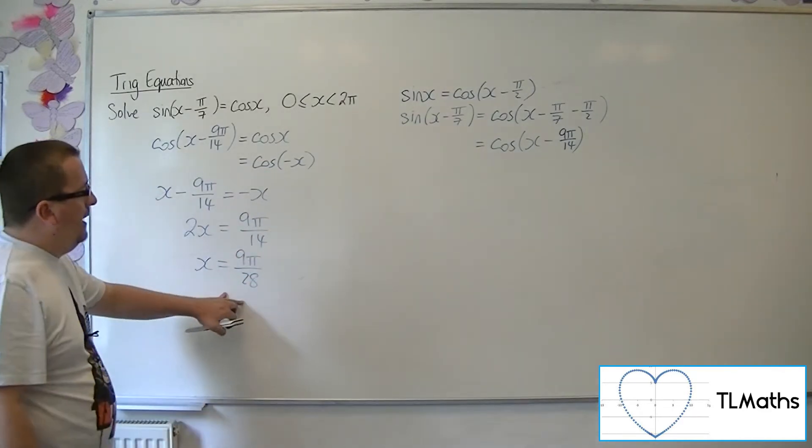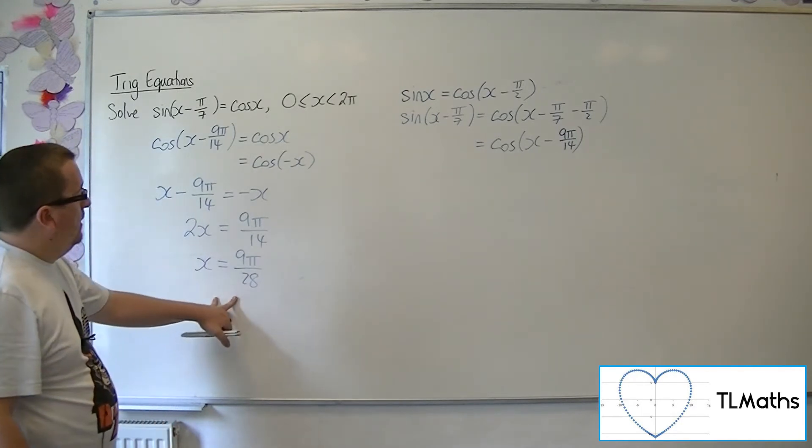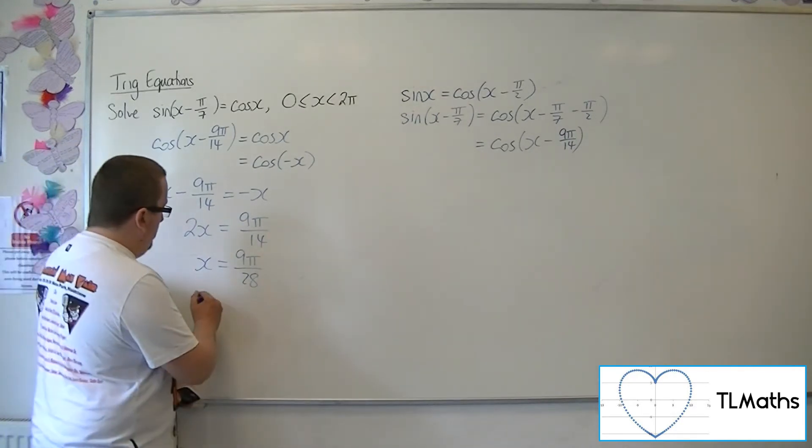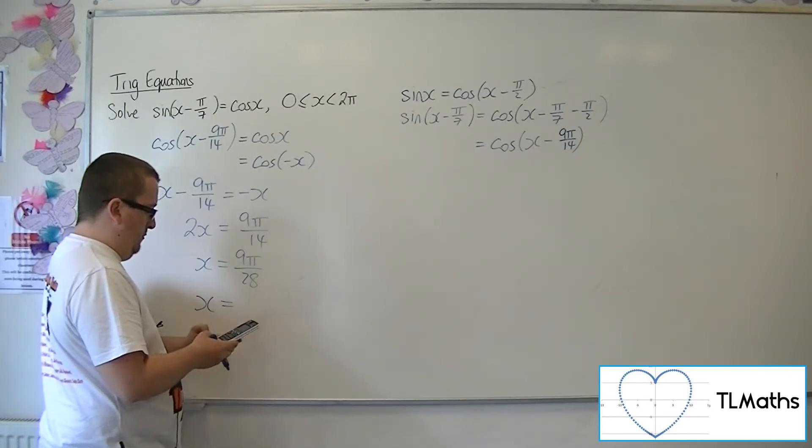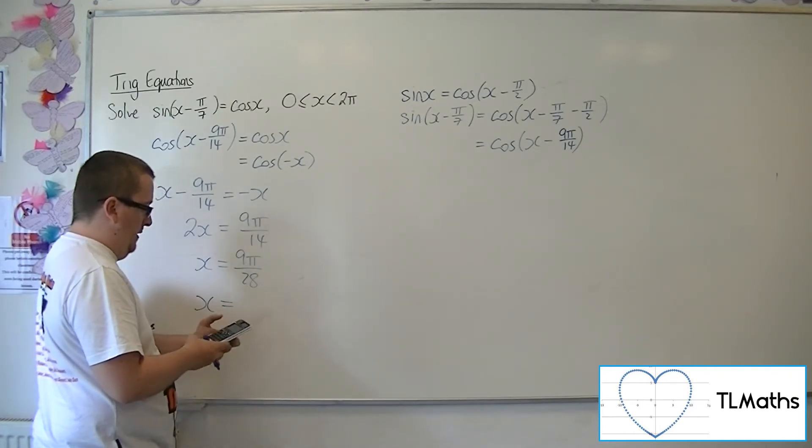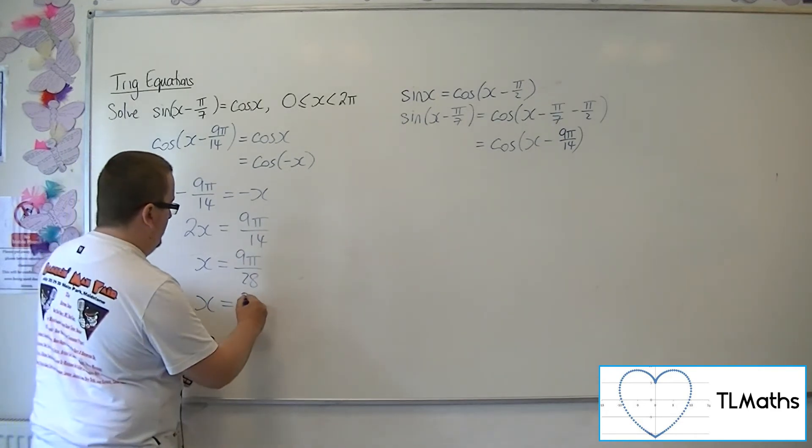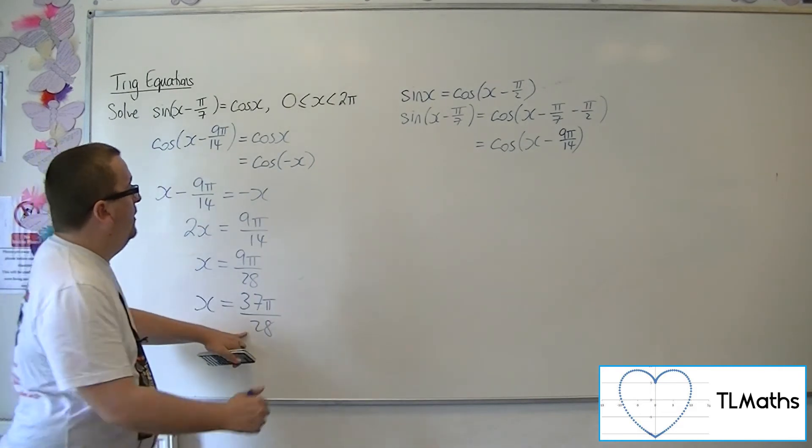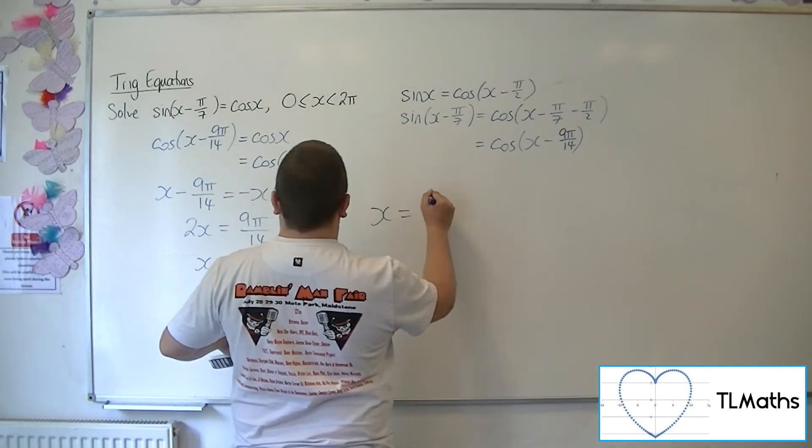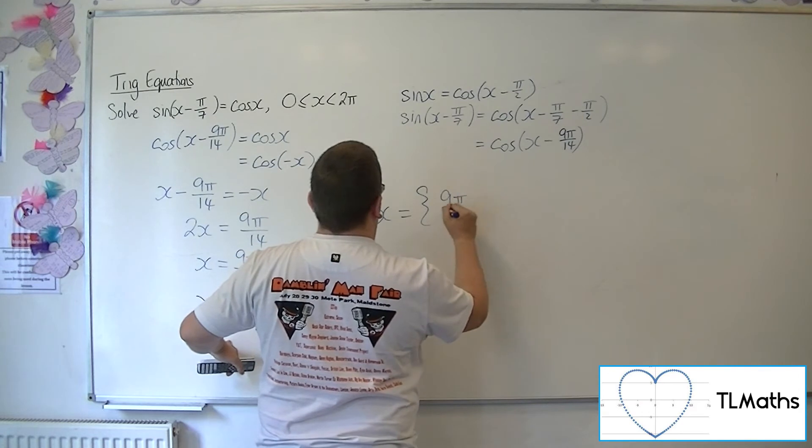That's the first solution between 0 and 2 pi. The other solution is pi away, so 9 pi over 28 plus pi gets me to 37 pi over 28. And these are the two solutions to the original problem.